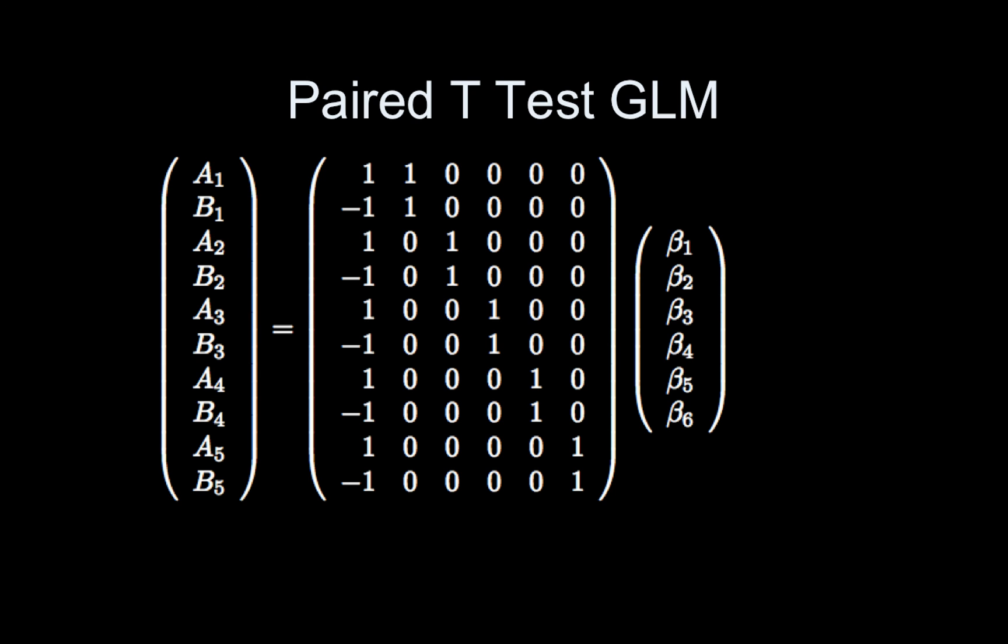Here's what that model looks like. Let's focus first on all these indicator variables out here. Beta 2 through beta 6 are modeling, those are doing the job of mean centering each pair of data. It's modeling out the mean for car 1, car 2, car 3, car 4, car 5. And once that's done, it looks like the picture I just showed where all of the points were centered about 0. And then beta 1 is what we're actually interested in. It's the difference.